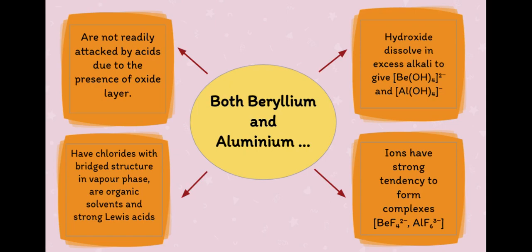Beryllium chloride and aluminium chloride have bridged structures in their vapour phase, are organic solvents, and are strong Lewis acids.